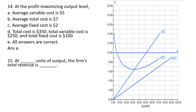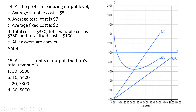Question 15: at blank units of output, the firm's total revenue is blank. Total revenue is price times quantity; the price is $10. At 50 units of output, 10 times 50 gives total revenue of $500. The other answer choices don't match: at 10 units revenue would be $100, at 20 units $200, at 30 units $300. The correct answer is choice A.